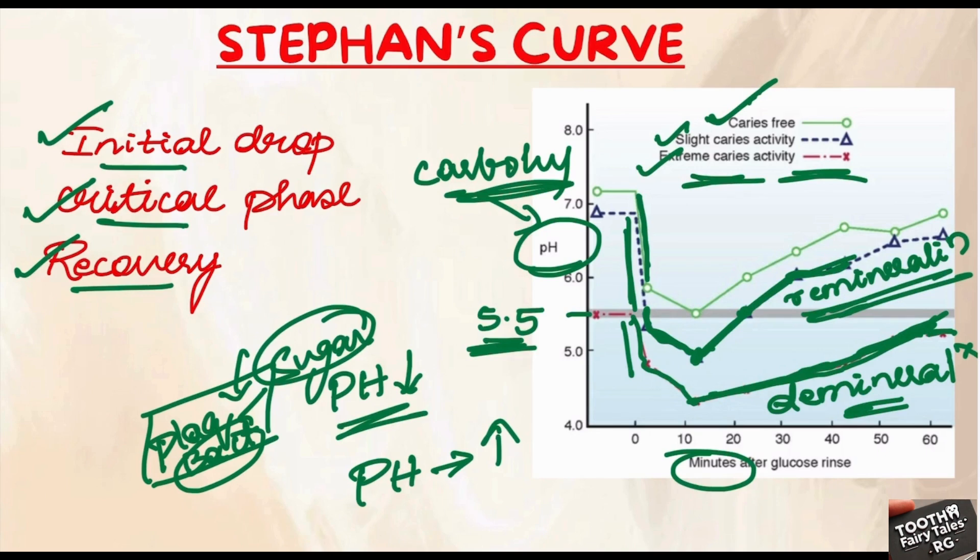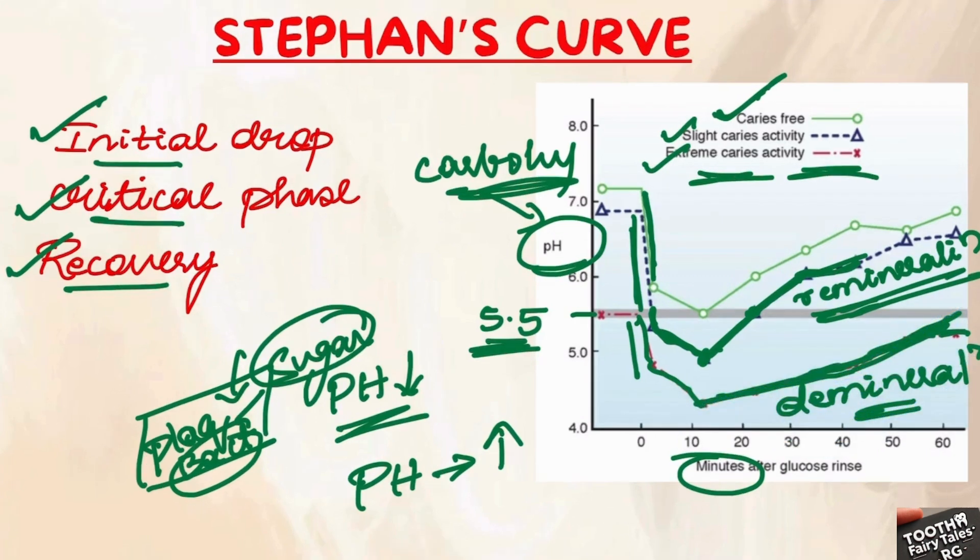The key takeaway here is that patients who experience prolonged periods of low pH are more likely to develop dental caries because their enamel is exposed to longer periods of demineralization. To wrap things up, Stephan's Curve is an invaluable tool for us as dental professionals. By understanding how pH levels fluctuate after carbohydrate exposure, we can better assess a patient's caries risk and tailor our preventative strategies accordingly.